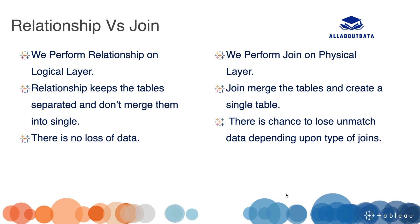In the relationship, it doesn't merge the tables into a single table. If we have multiple tables, it keeps all the tables separated. But in joins, joins must merge the tables and create a single table. In the relationship there is no loss of data because we are not merging the tables into a single table, and in joins there is a chance to lose your data.